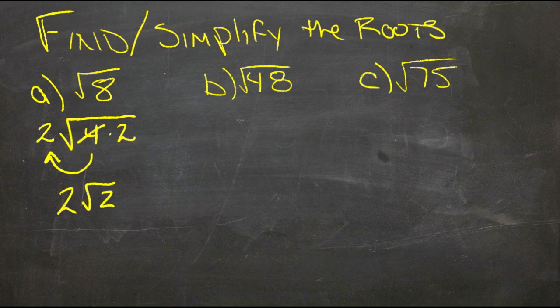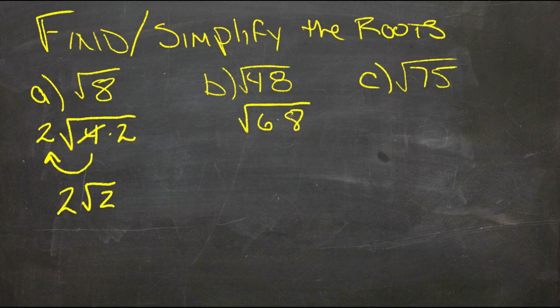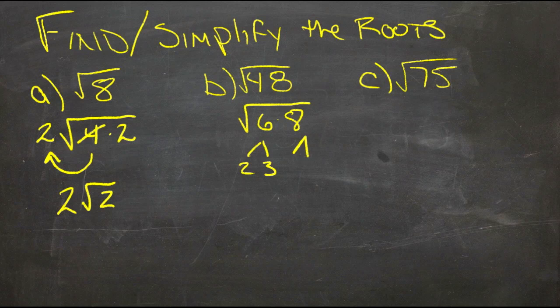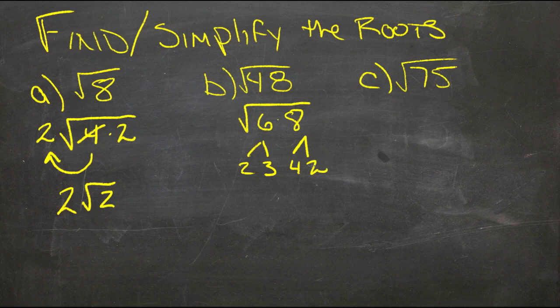We can do the same thing here. 48 is 6 times 8, and 6 is 2 times 3, and 8 is 4 times 2. So here we have another 4, and it can go out.